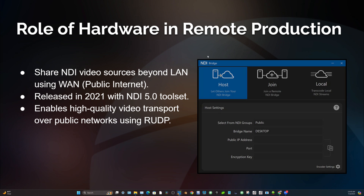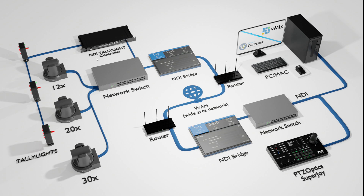NDI Bridge allows you to transport video over a public area network using RUDP. You can have a host hosting the bridge, and the host takes that information — a public IP address, a port number, and an encryption key — and sends it to the person who wants to join. The client joins the host, so there's a little bit of networking knowledge needed. You need your outside IP address, which you may need to get from your internet service provider, and you'll need to set up a port on the router so that video can flow through. NDI provides documentation on this.